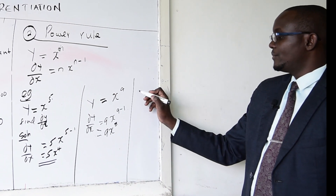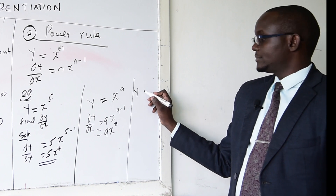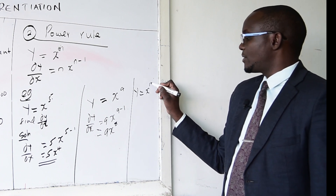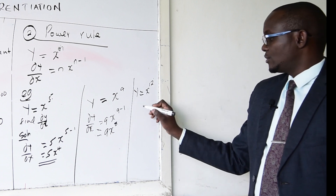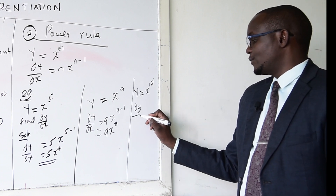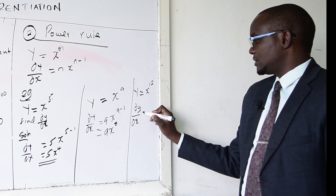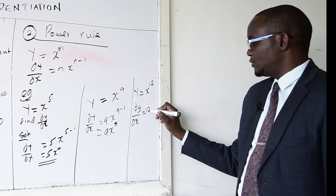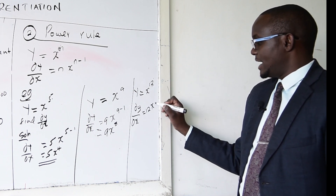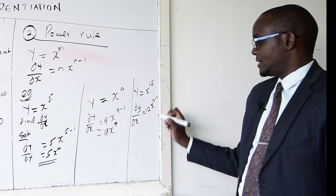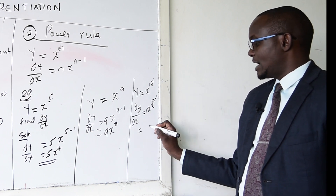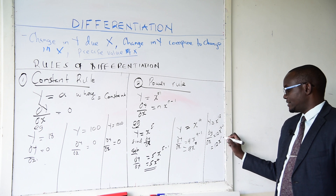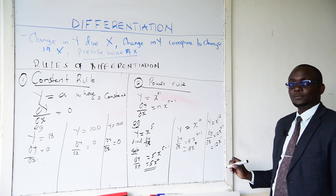One last example: when you are given y equals x^12, to find dy/dx, you take n which is 12, multiply by x, and subtract 1 from the power. The answer becomes 12x^11, since 11 is 12 minus 1.